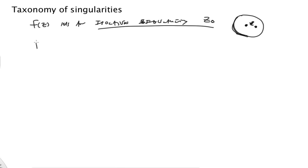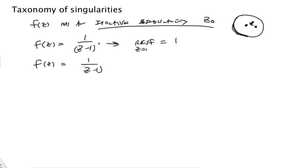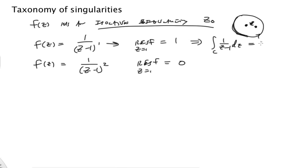We've seen functions like 1 over z minus 1 — this has a first power — and the residue at z equals 1 of f is going to be 1. But if I look at f of z equal to 1 over z minus 1 squared, the residue at z equals 1 is actually 0. So the type of singularity defined by these different powers matters a great deal. If you take a contour around that singularity at 1, in the first case you get 2 pi i, and in the second case you get 0.